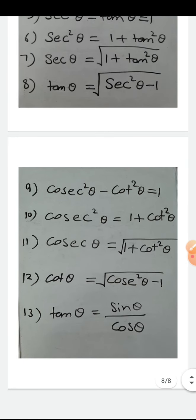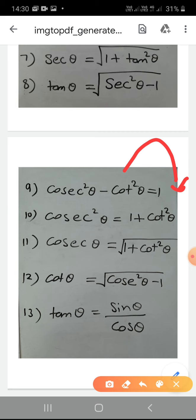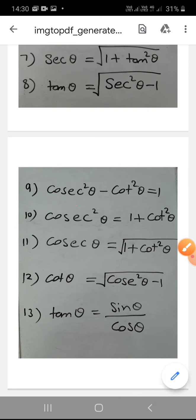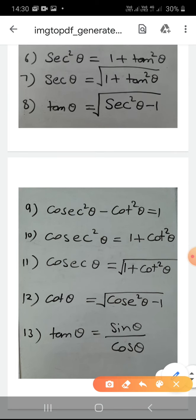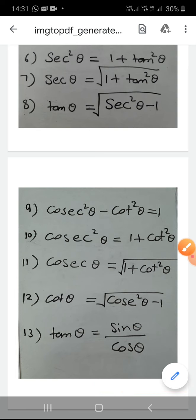From the third identity — cosec²θ - cot²θ = 1 — shifting cot²θ: cosec²θ = 1 + cot²θ. Taking square root: cosec θ = √(1 + cot²θ). Another identity: shifting cot²θ to positive side and 1 to negative: cot²θ = cosec²θ - 1. Taking square root: cot θ = √(cosec²θ - 1).